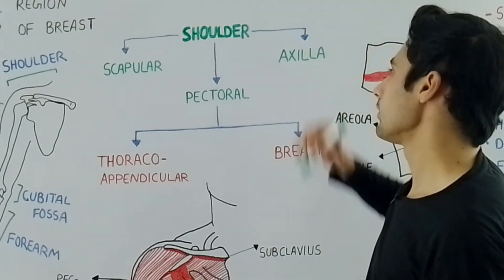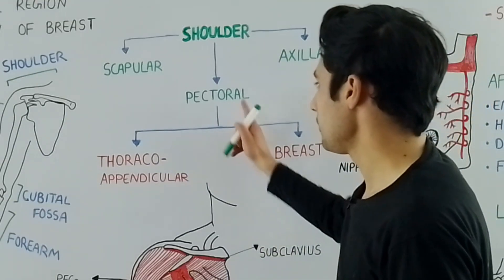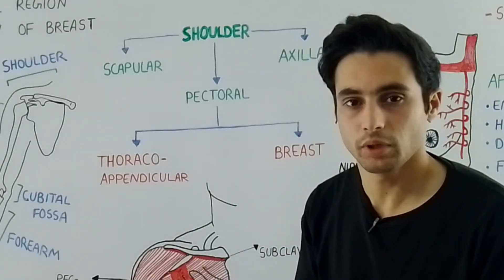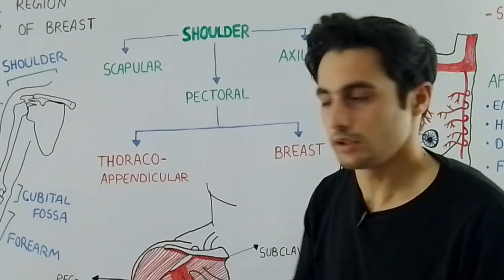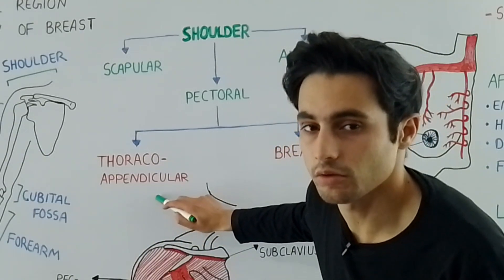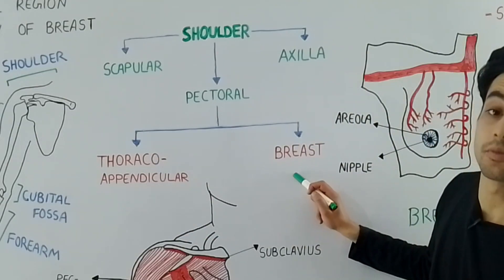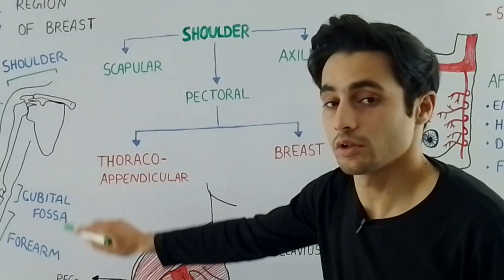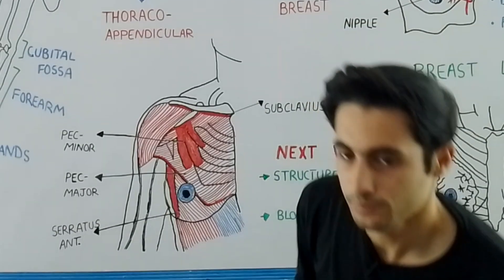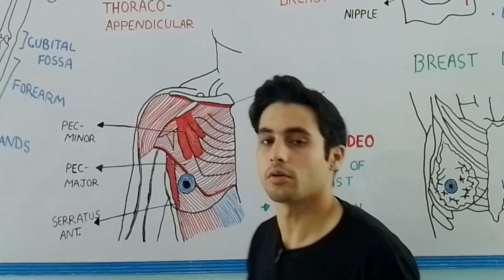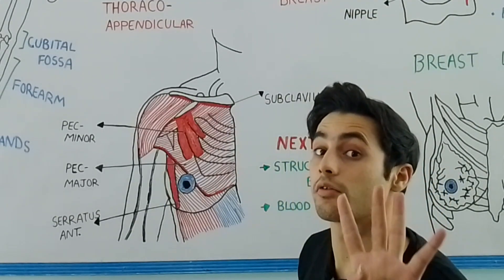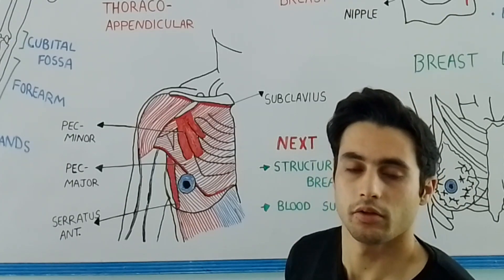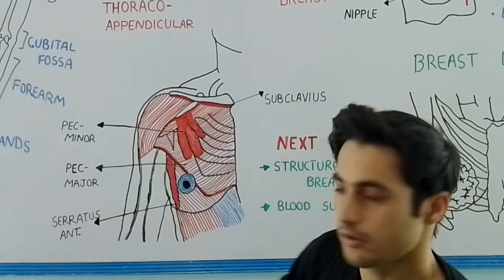The pectoral part is further divided into two main regions: the thoraco-appendicular muscles and the breast. The thoraco-appendicular muscles are four muscles present on the front side of your thorax and on the lateral side.